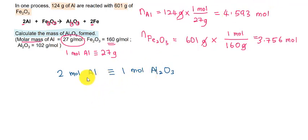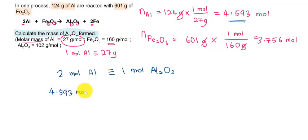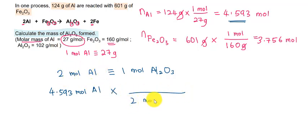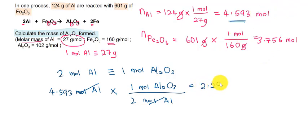Now let's find how many moles of aluminium oxide are produced if we use 4.593 moles of aluminium. Using the conversion factor: 4.593 moles of aluminium × (1 mole Al₂O₃ / 2 moles Al). We put 2 moles of aluminium in the denominator to cancel it out, so 1 mole of aluminium oxide goes to the numerator. This gives 2.297 moles of aluminium oxide produced from aluminium.